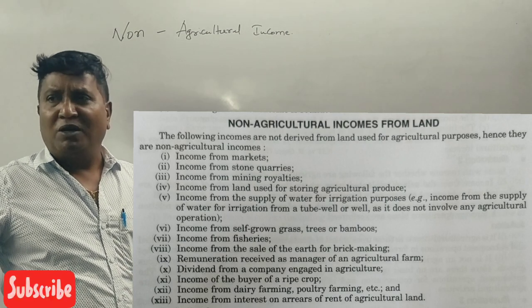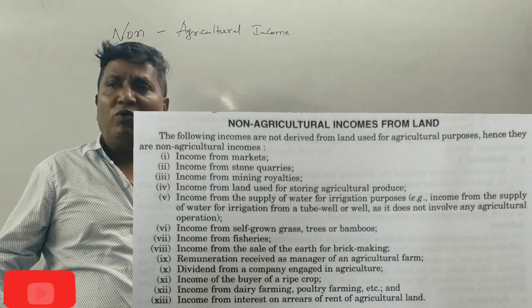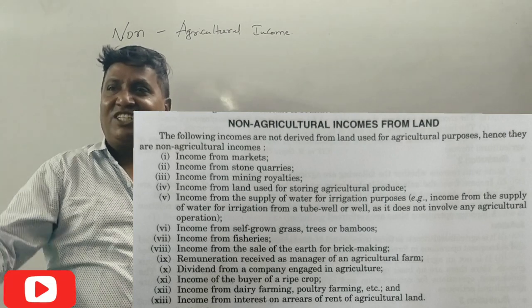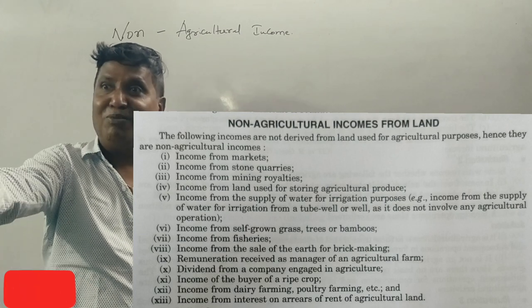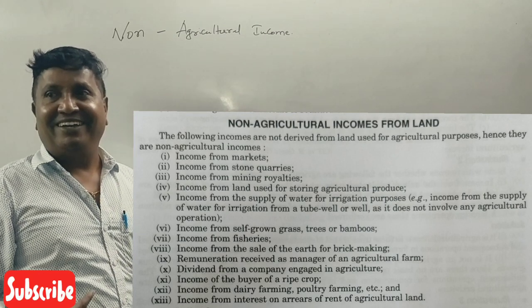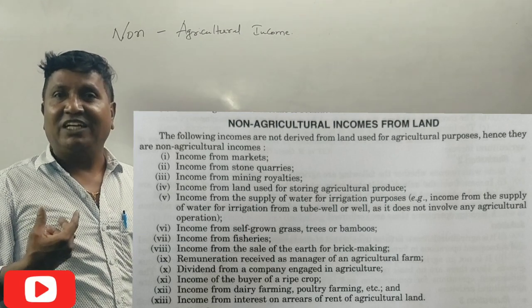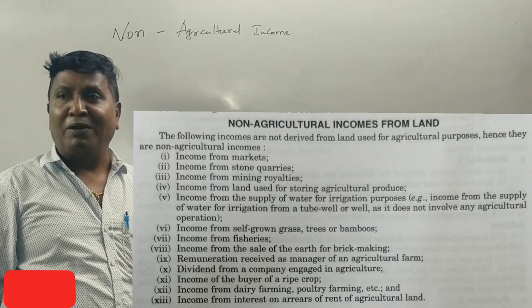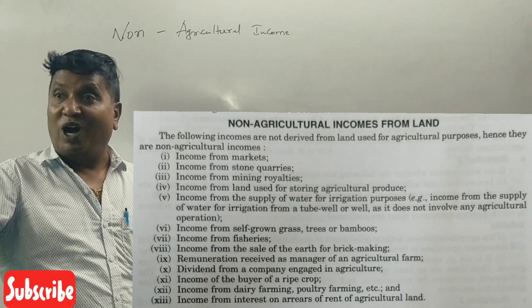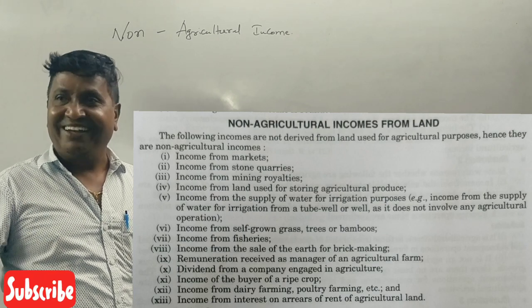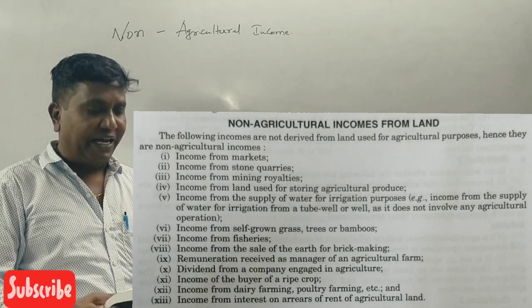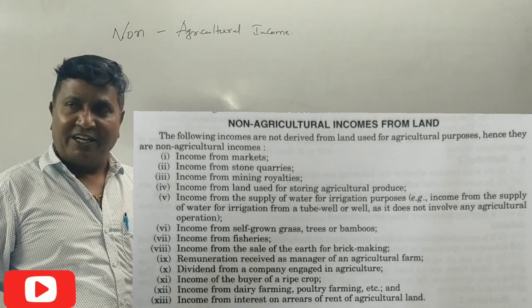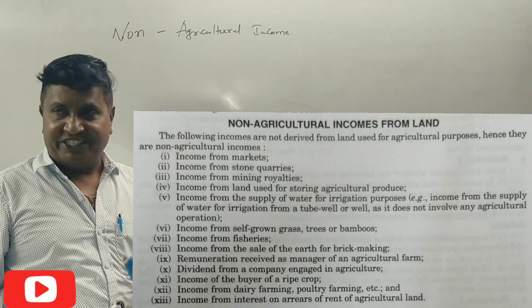Income from supply of water for agricultural purposes or irrigation is non-agricultural in nature. If you supply water to agricultural farmers from other sources and receive income for it, this income is not agricultural income.